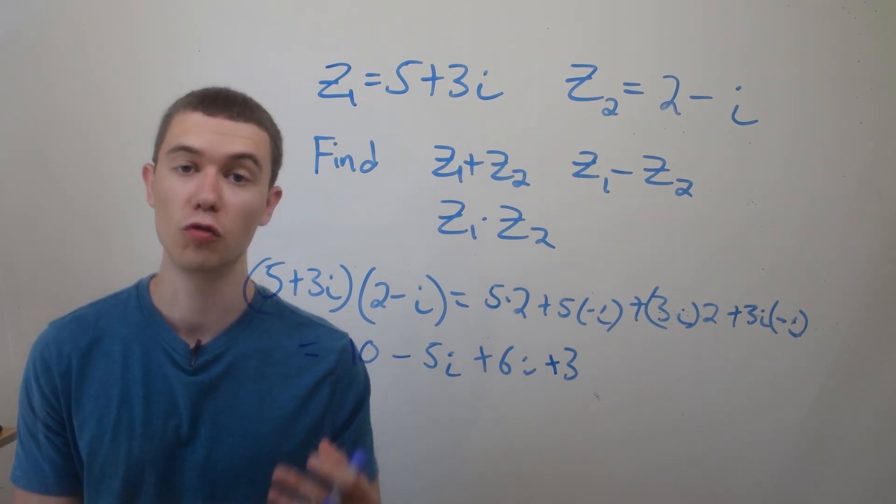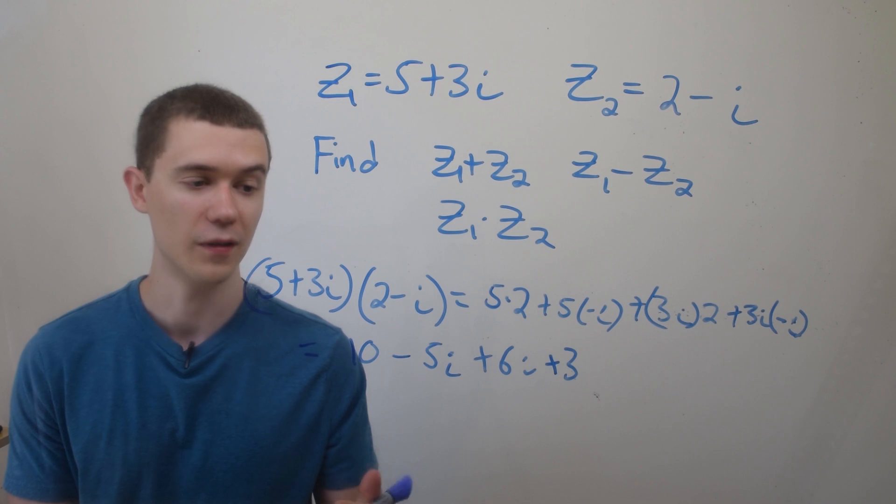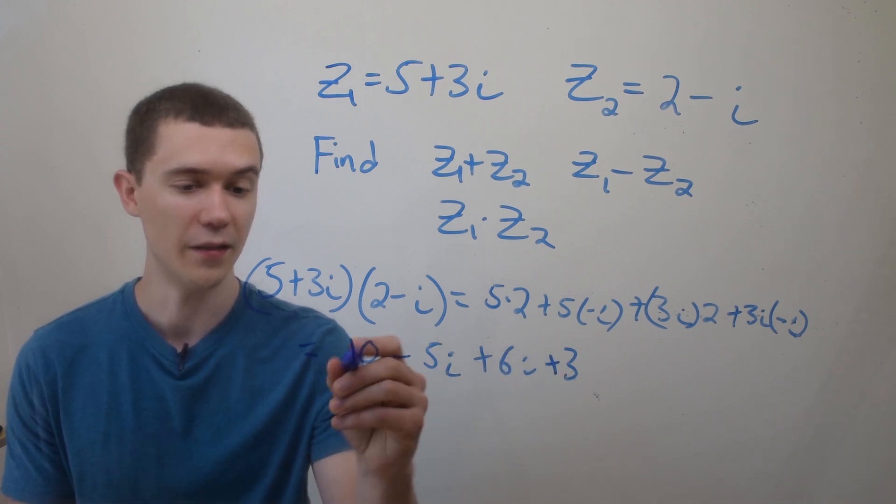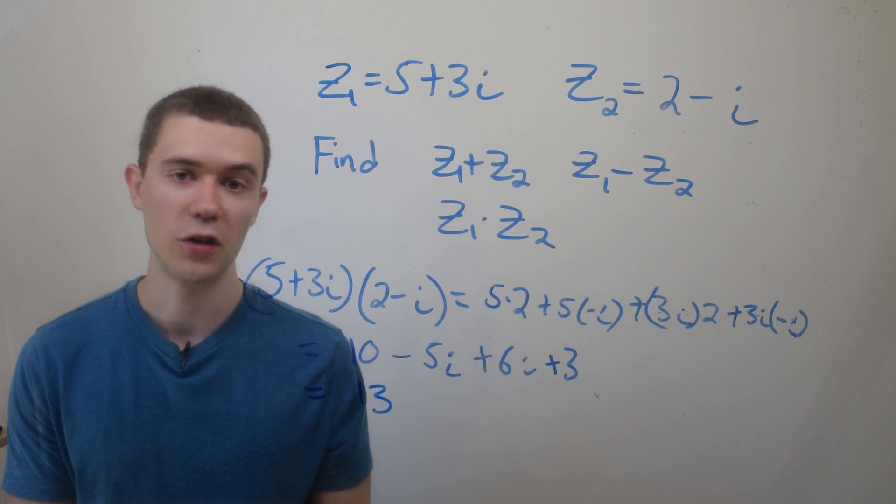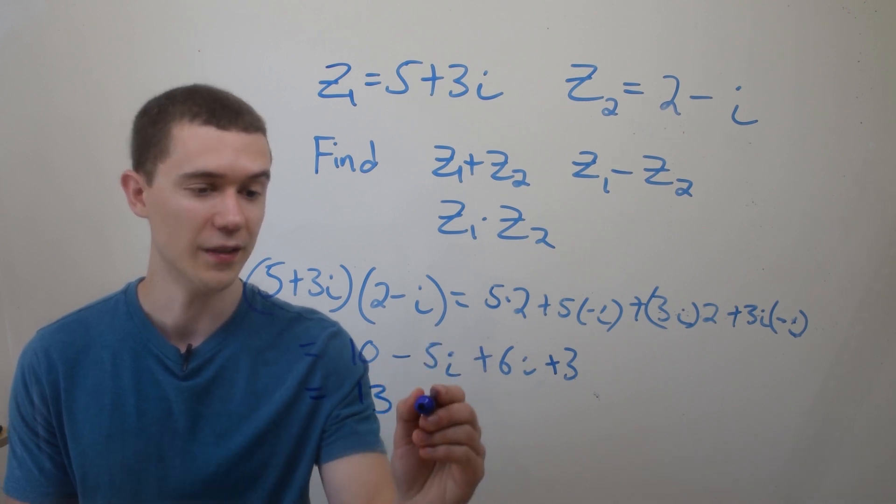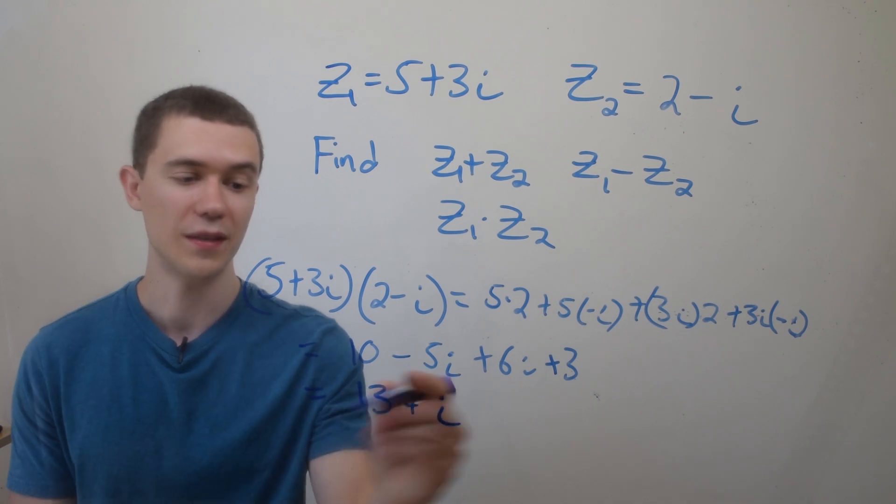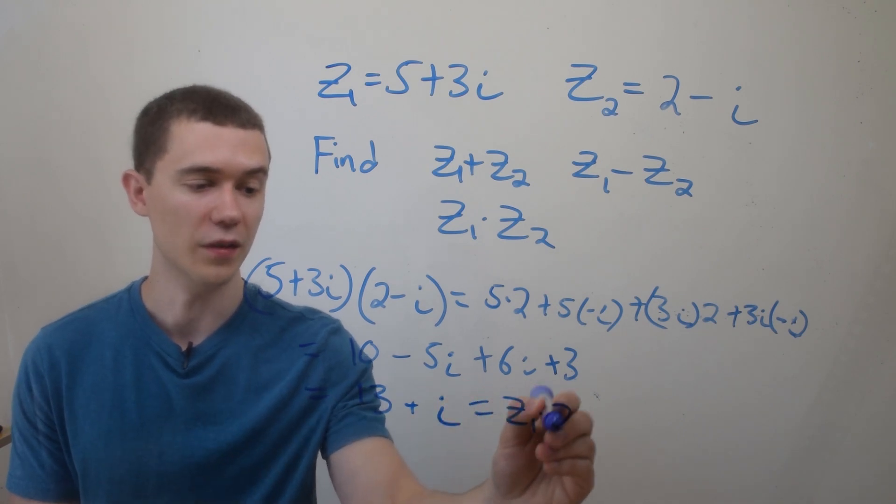So at this point, I'll just group by the real parts and the imaginary parts. The real part will be the 10 and the 3, that makes 13. The imaginary part will be the minus 5 and the 6, that's a plus 1i. So this is our multiplication, z1 times z2.